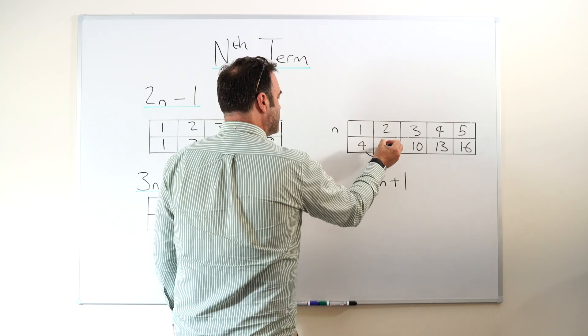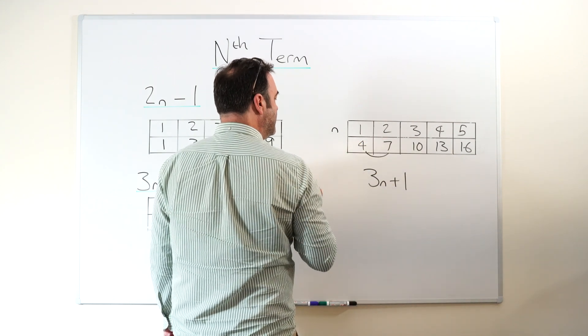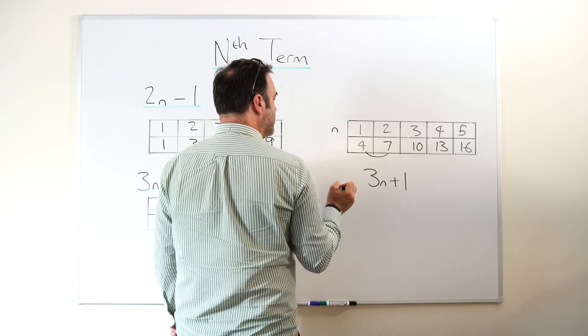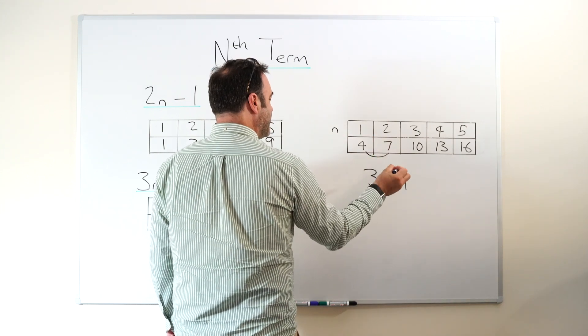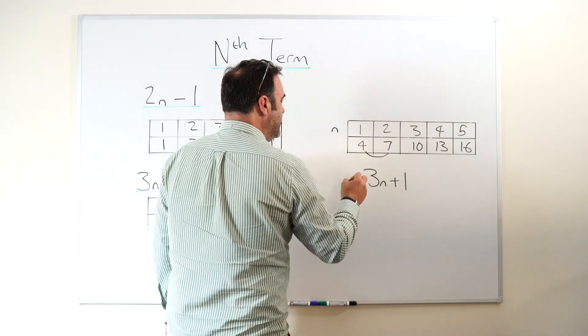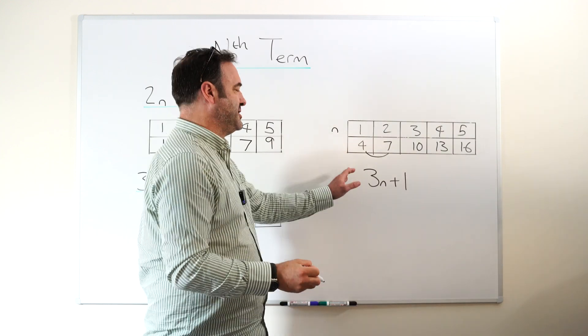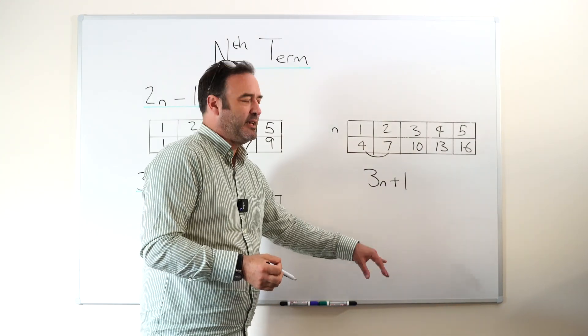Difference between the first answer and the second answer. That's what it is times n. Then you test it with n is one. Three times one is three, but the answer is four. So we know we have to adjust it by adding one. Now it could be that we need to adjust it by subtracting something. It can go either way.